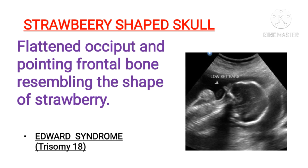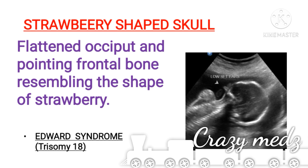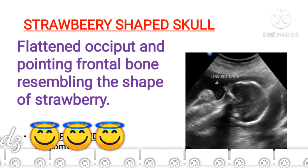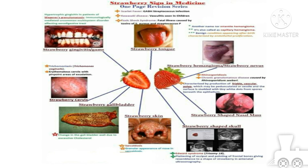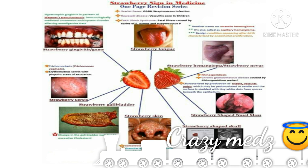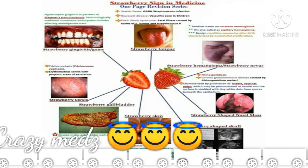Next is the strawberry-shaped skull, most commonly seen in the genetic disease Edwards syndrome, caused by trisomy of chromosome 18. The occipital bone is flattened and the frontal bone is pointed, resembling the shape of a strawberry. Therefore, an ultrasound scan of a fetus with Edwards syndrome resembles a strawberry-shaped skull.